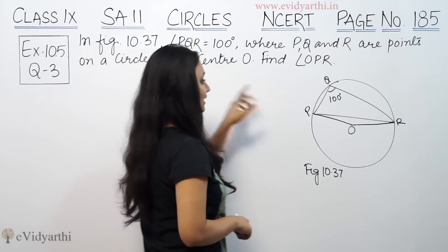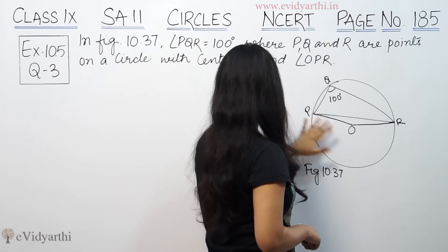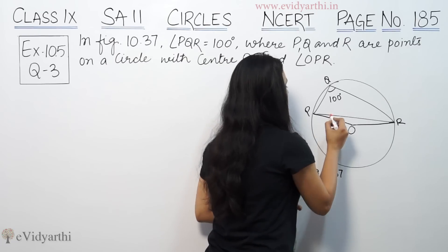Angle PQR is 100 degrees. This angle is 100. PQR are points on a circle. Find angle OPR. We need to find this angle, angle OPR.